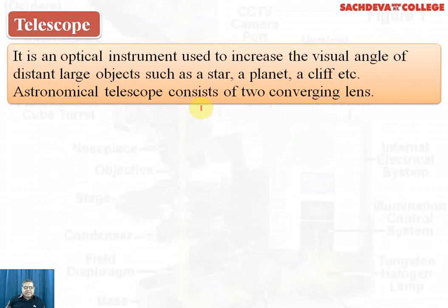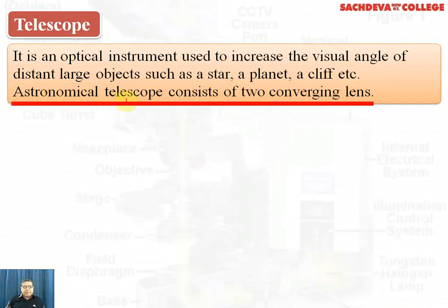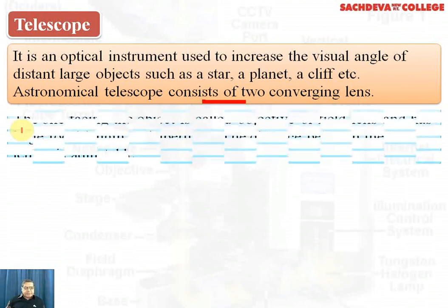The eyepiece is also known as the ocular. The telescope is an optical instrument used to increase the visual angle of distant large objects such as stars, planets, a cliff, etc. An astronomical telescope consists of two converging lenses — two convex lenses — the objective as well as the eyepiece.